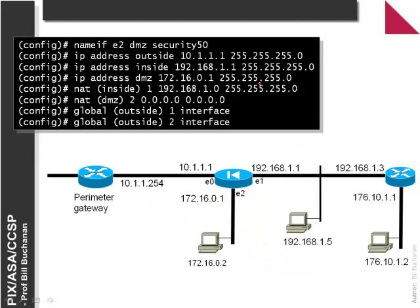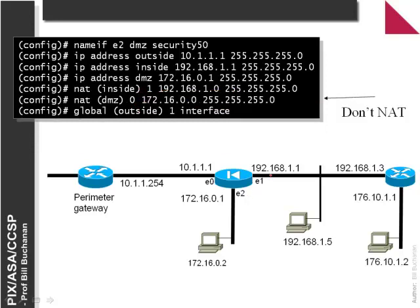This will use one address on the outside for our whole network. In another example, on the DMZ we allocate a local pool. If we don't want these addresses to be NATted, we put a zero in the DMZ, which means there will be no network address translation.